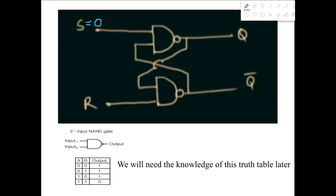Now let's initialize S and R using zero and zero. If I put zero here, at least one input to the NAND gate is zero, so Q should be one. Similarly, R equals zero and at least one input is zero, so Q prime should also be one. But here's the problem — Q and Q prime are complements of each other, they are opposites. How can both have the same value of one? This is a problematic state, making this case completely impossible and unusable.